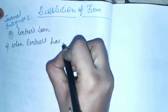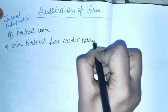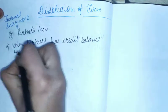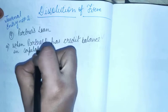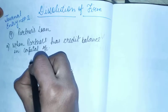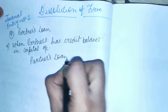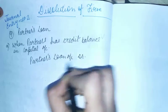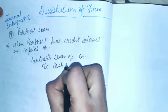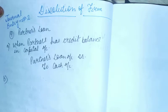When a partner has a credit balance in the capital account, what will be the entry? Partners' Loan Account debit, to Cash Account. I will explain everything while doing a question from the exercise.